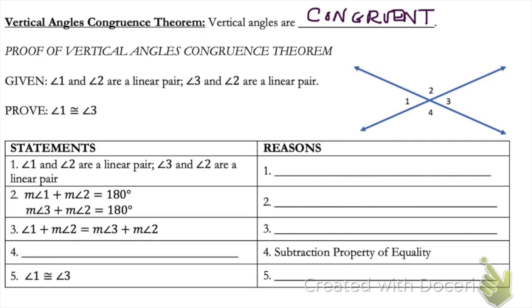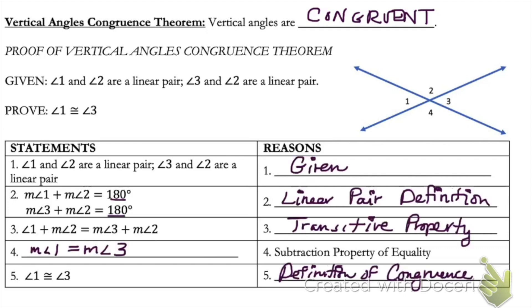Because we are given our information in the picture — that angles one and two are going to be a linear pair, and angles three and two are also a linear pair — they are creating those lines.